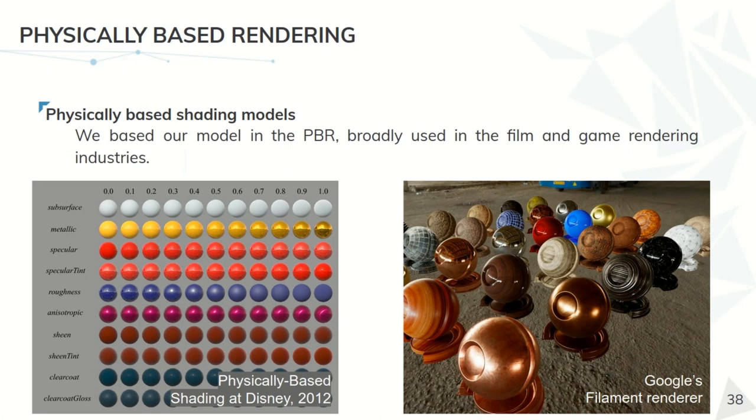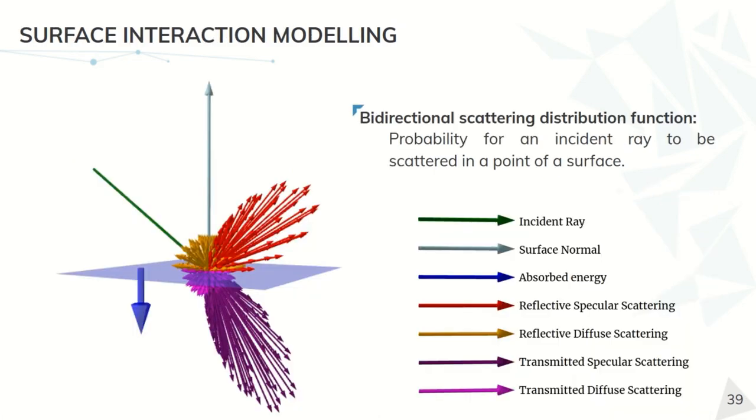In general, our main object is the bidirectional scattering function that, similar to the volumetric one, explains the probability for an incident ray to be scattered in any direction. Of course, in this case, it's a bit more complex because we need to take into account the geometry between the incident ray and the surface, and in general, we divide this in four different BSDFs.